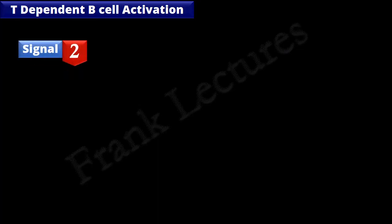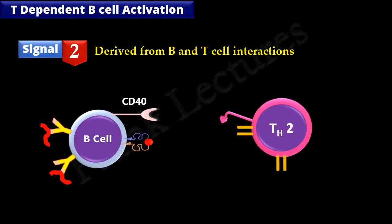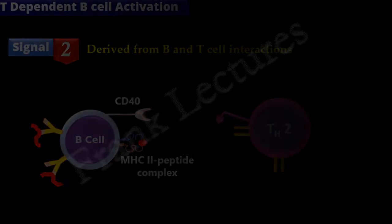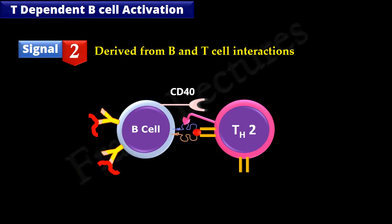The second signal is derived from the interactions between B and T-cells. The B-cell and the T-helper cell come in close proximity. Recall that the B-cell displays antigens as an MHC2 peptide complex on its surface. Once antigen recognition is done by the T-helper cell, they express CD40 ligand on their surface. The CD40 receptor present on the B-cell recognizes and binds the CD40 ligand on the T-helper cell. These interactions between T- and B-cells thus provide the second signal for B-cell activation.